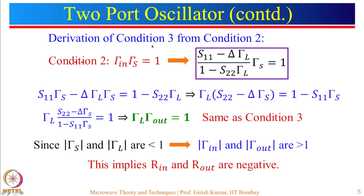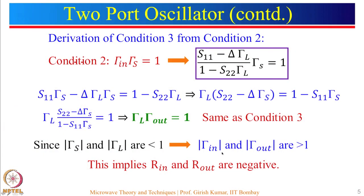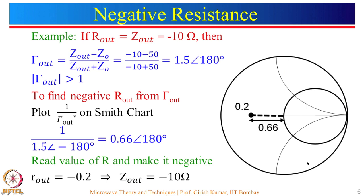We started with condition 3 and reached condition 2. We had seen that since gamma_s and gamma_l are always going to be less than 1 for any physical impedance — resistance plus inductance or capacitance — this will always be less than 1. Therefore, gamma_in and gamma_out will always be greater than 1, which implies R_in and R_out are negative. We used the Smith chart to find the value of R_out for a given gamma_out.